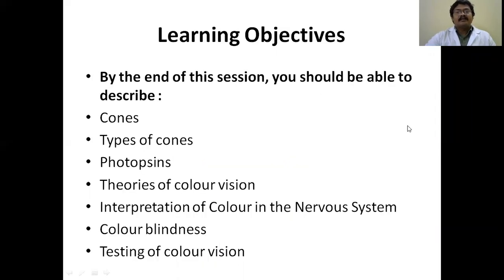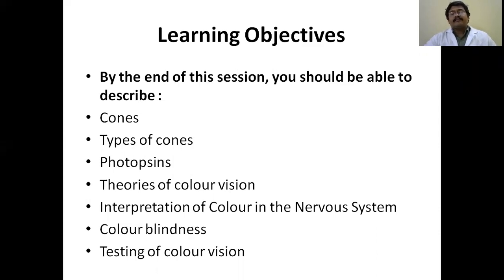Today's learning objectives are: what are the different types of cones — we have already discussed the three types: S-cone, L-cone, M-cone — what are the different photopigments, theories of color vision, interpretation of color by the nervous system, color blindness, and testing of color vision. These topics are very commonly asked in viva and university examinations.